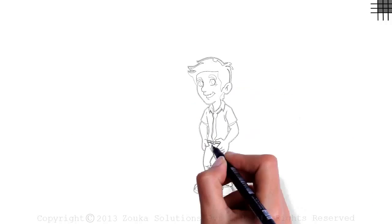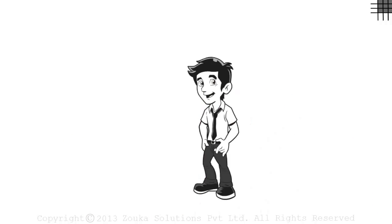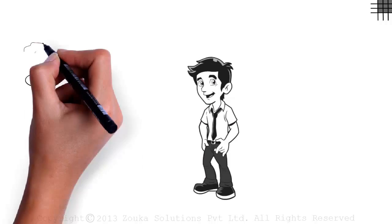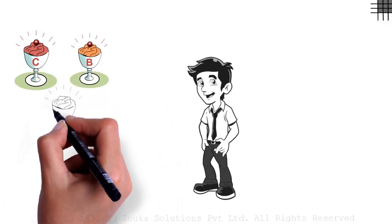You are in some serious mood to have ice cream and you have three options to choose from: Chocolate, Butterscotch and Vanilla. Let's just refer to them as C, B and V.